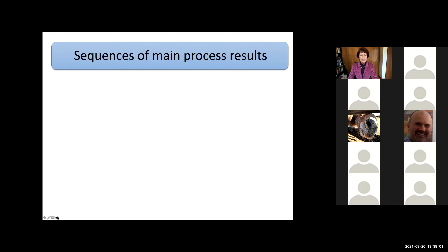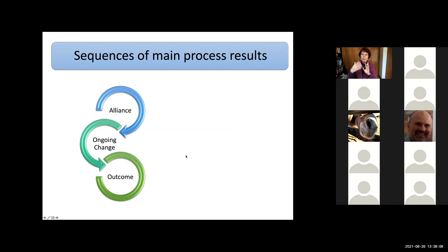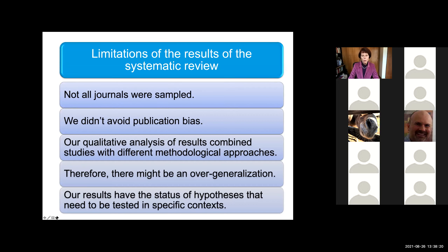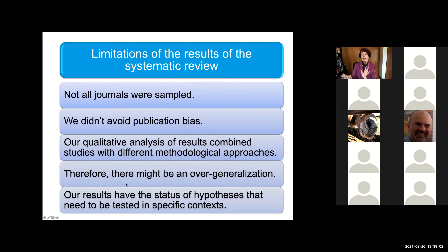We also found interesting sequences in process results — for example, between alliance, ongoing change, and outcome, and also emotional work leading to change of meanings, which leads to well-being. Some limitations: we sampled eight journals rather than all journals; it's impossible to avoid publication bias, so we know more about effective interventions than non-effective ones; and our qualitative analysis combines studies with different methodological approaches, so there may be over-generalization. Therefore our results have more the status of hypotheses that need to be tested in future studies.